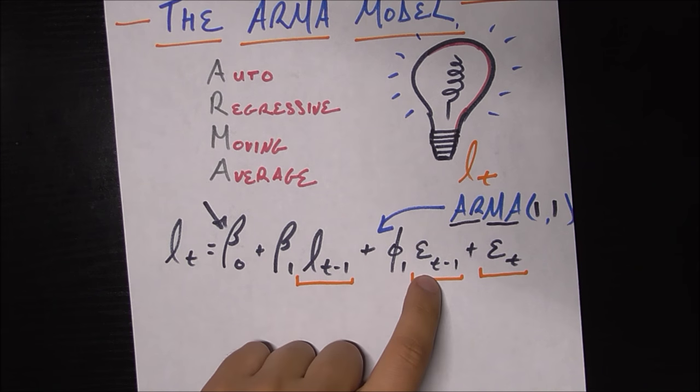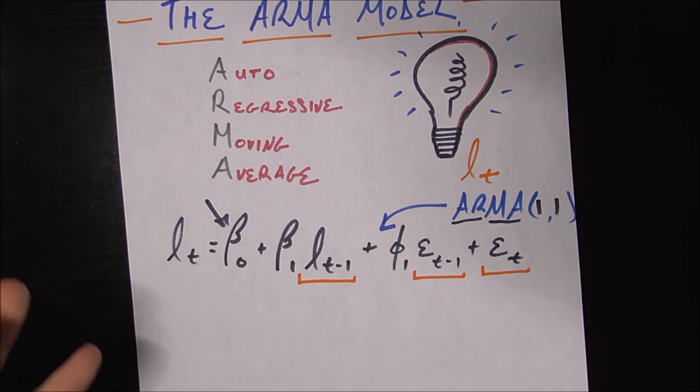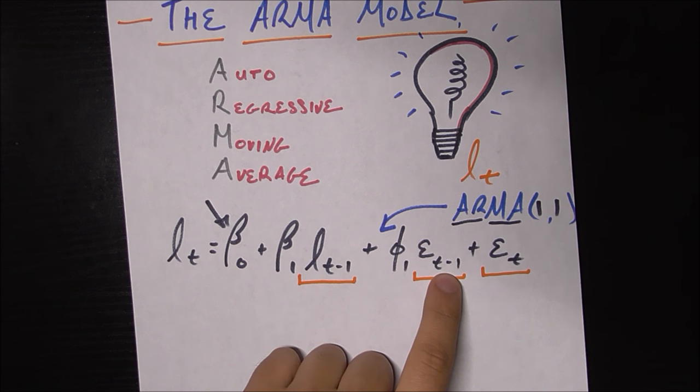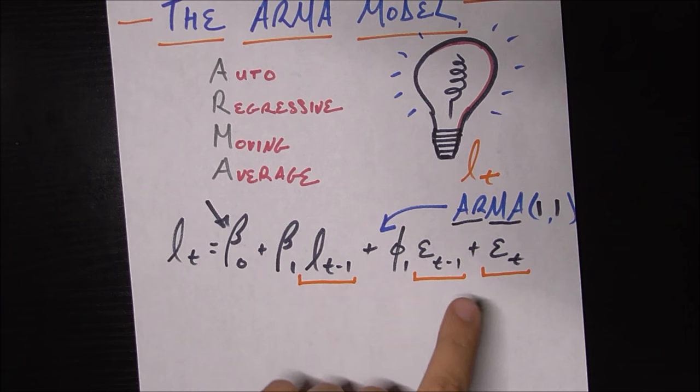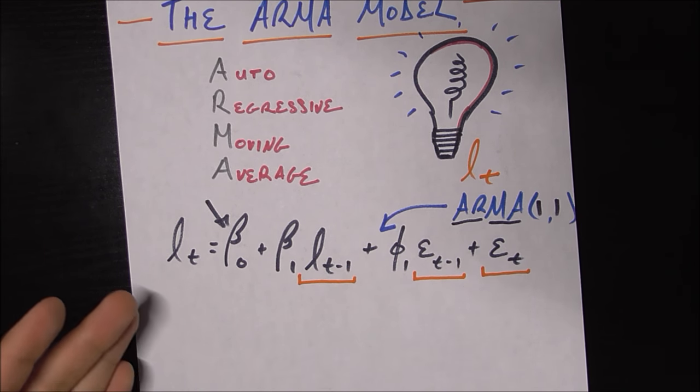This basically says that last month I made some prediction about how many light bulbs to create. My prediction was off by something, whether positive or negative. This error epsilon sub T minus 1 is how much I was off by in the previous period. So I'm incorporating that error, how much I was wrong by, into my new prediction for this month.